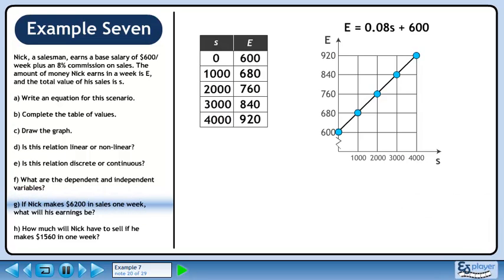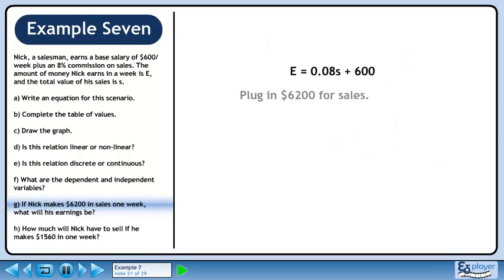Moving on to Part G, if Nick makes $6200 in sales one week, what will his earnings be? Plug in $6200 for sales. This gives us E equals 0.08 times $6200 plus $600. Evaluate to get $1,096.